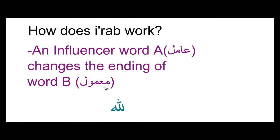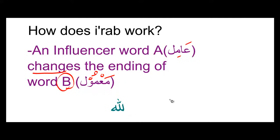So how does i'raab work? An influencer word — let's call it A — also known as amil, the influencer is known as amil, changes the ending of word B, what is known as ma'mool. Let's look at an example to see how this is applied. If you remember from video 8.1, we did the verse Alhamdulillahi Rabbil Alameen, and we know that both of them are kasras.